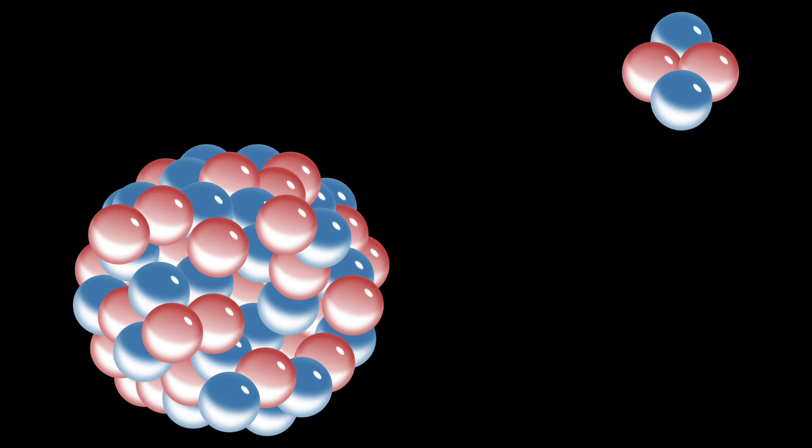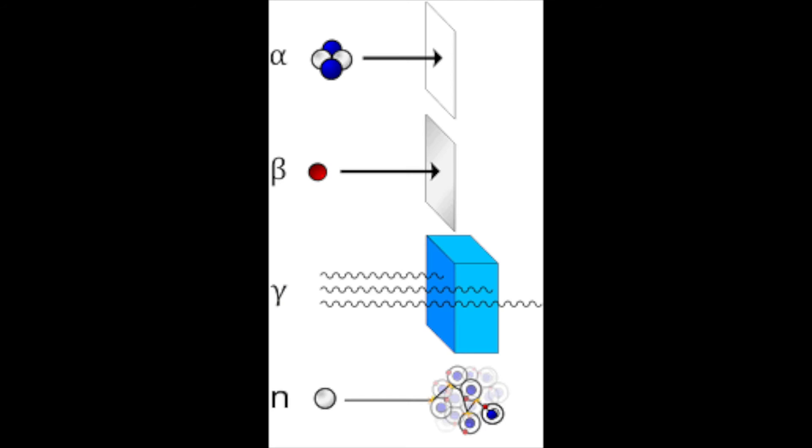So first of all we will start with alpha radiation. Now alpha radiation are helium nuclei which means that they have two protons and two neutrons. Now they are fairly big but this also means that they are slow moving. Therefore they cannot penetrate very far into materials because they are stopped quickly, meaning that they are a lot less dangerous than something like gamma.